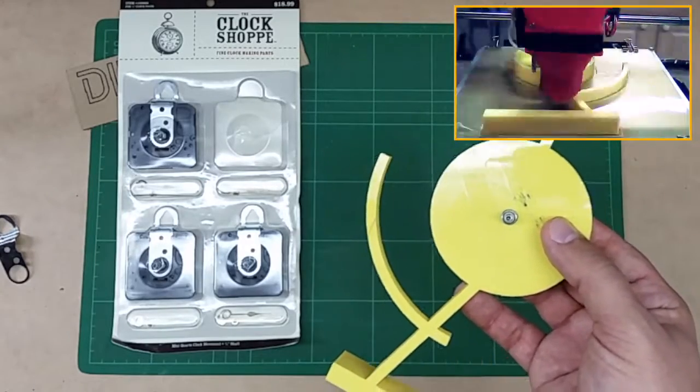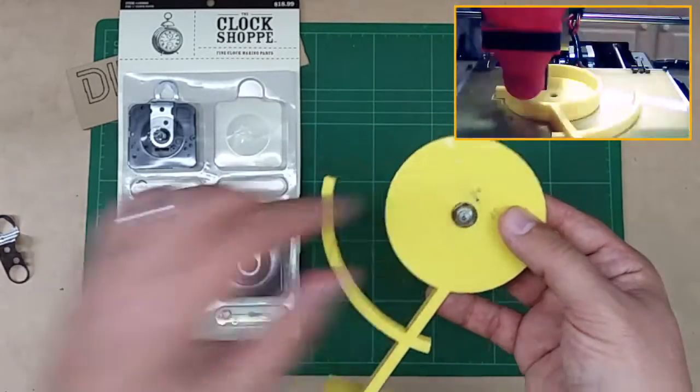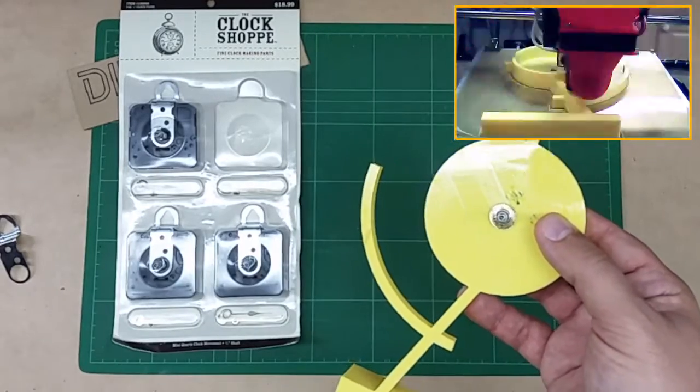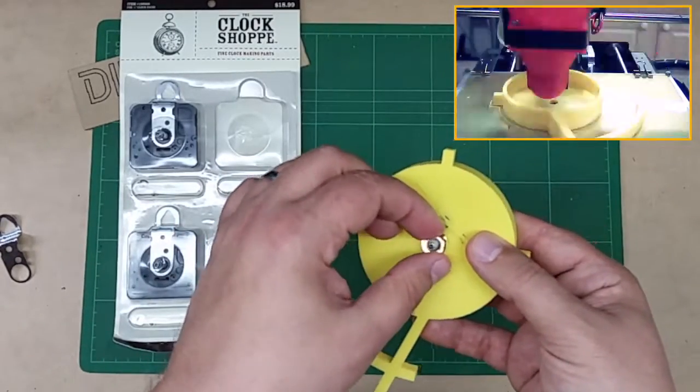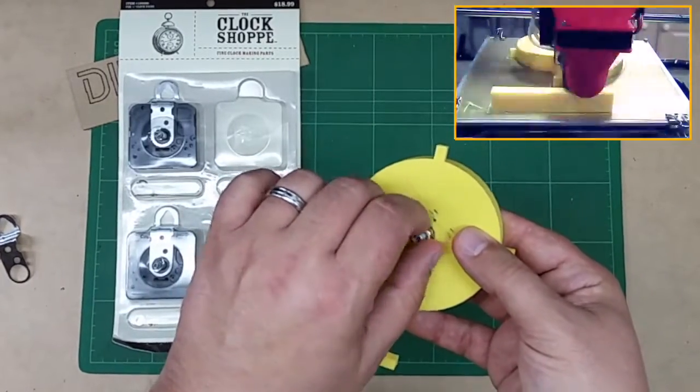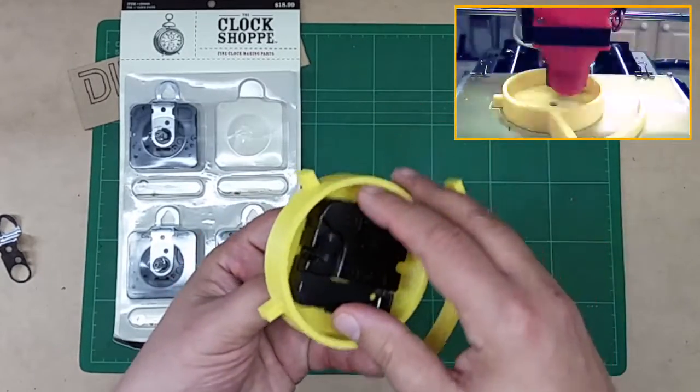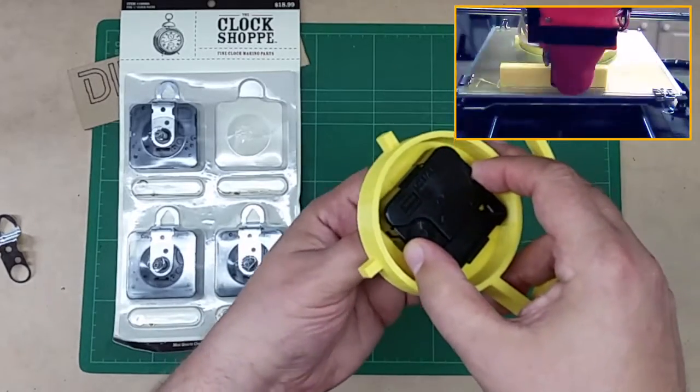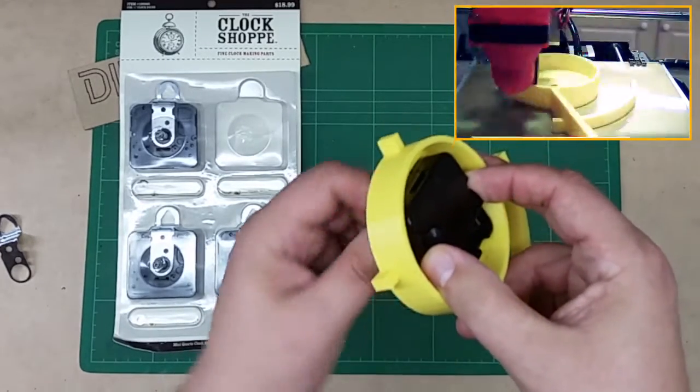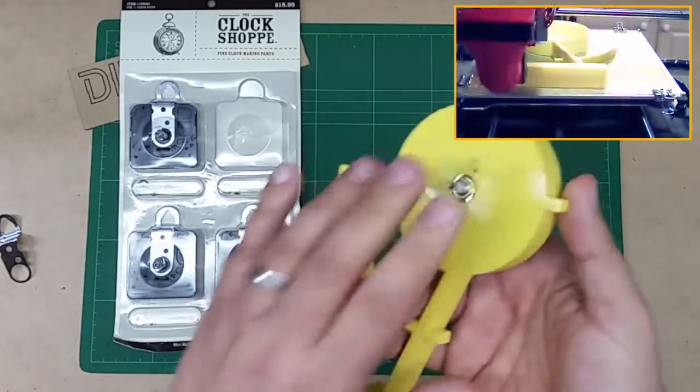What this does is fits inside here, sticks through there like that. And then what you do is you take a retaining washer and then a nut and then screw this on here. And just like that, and then kind of square up the body in the back. It takes just a AA regular AA battery.